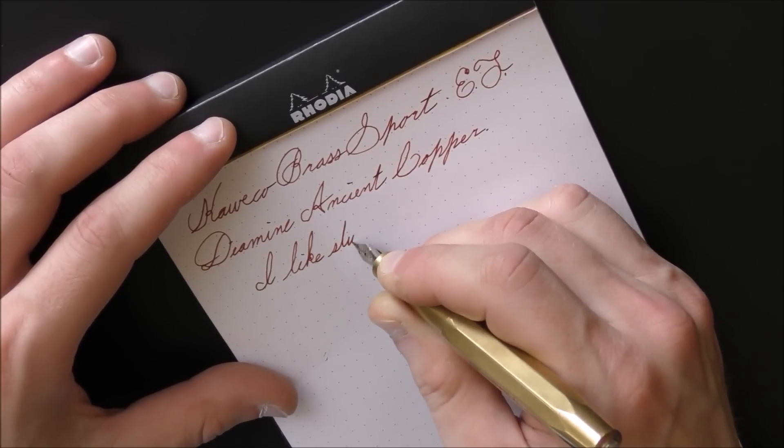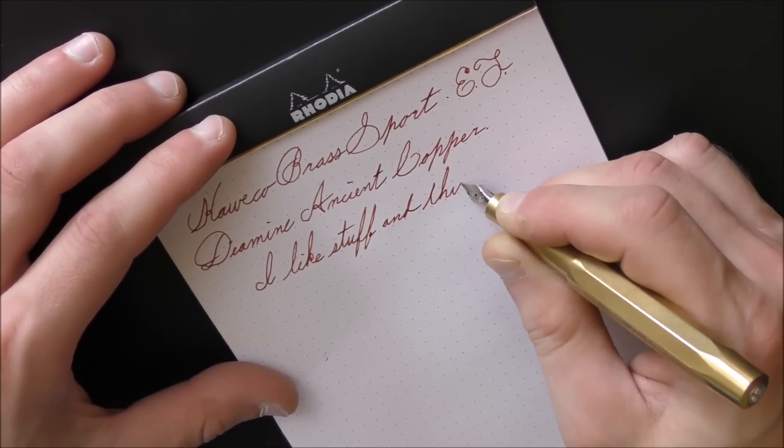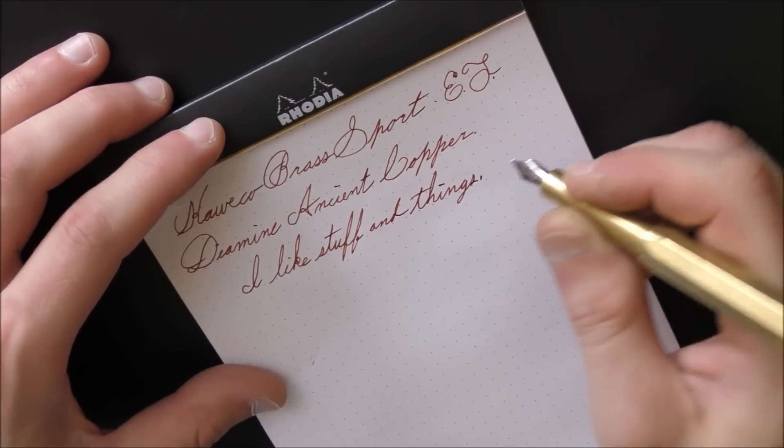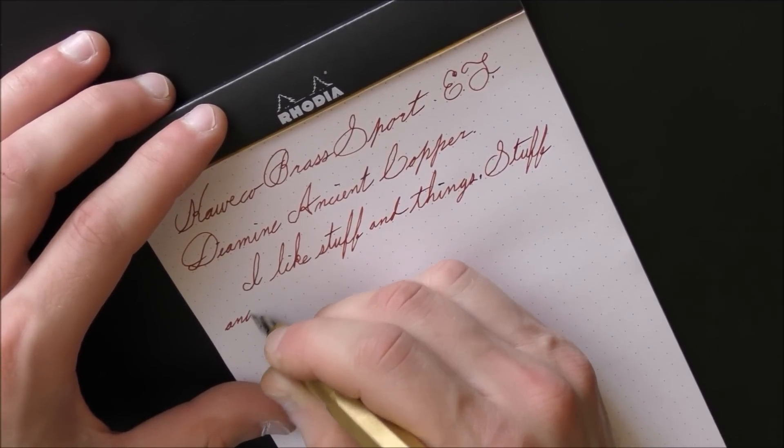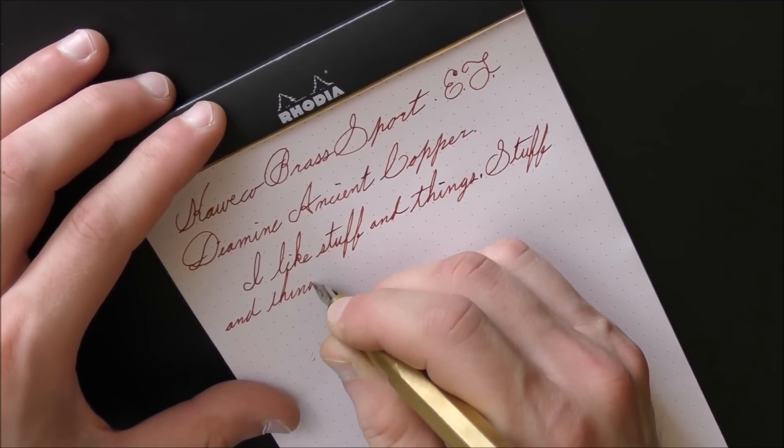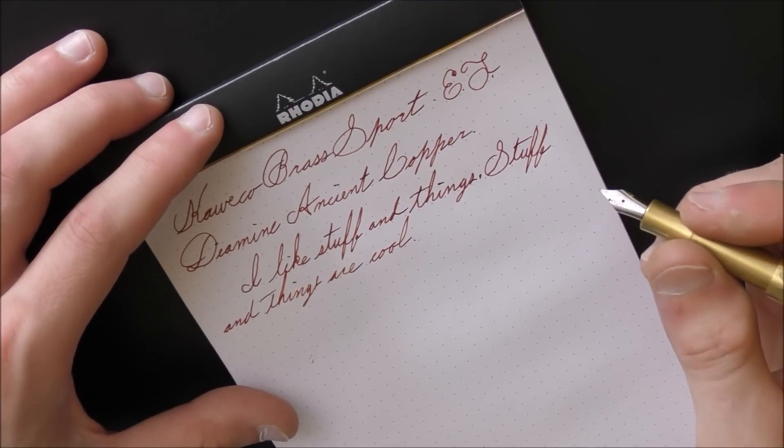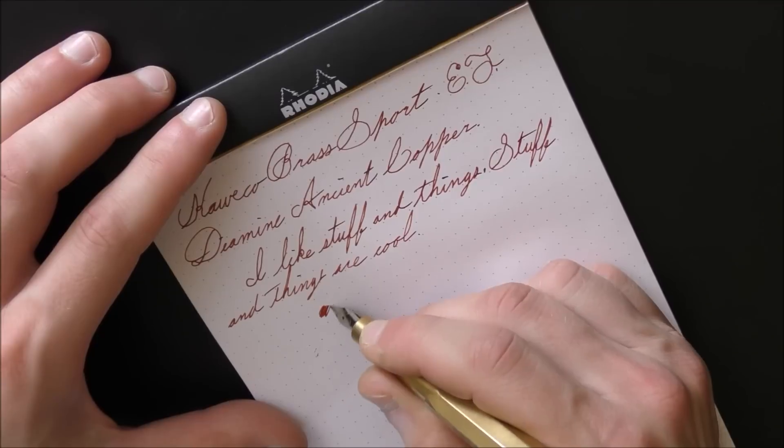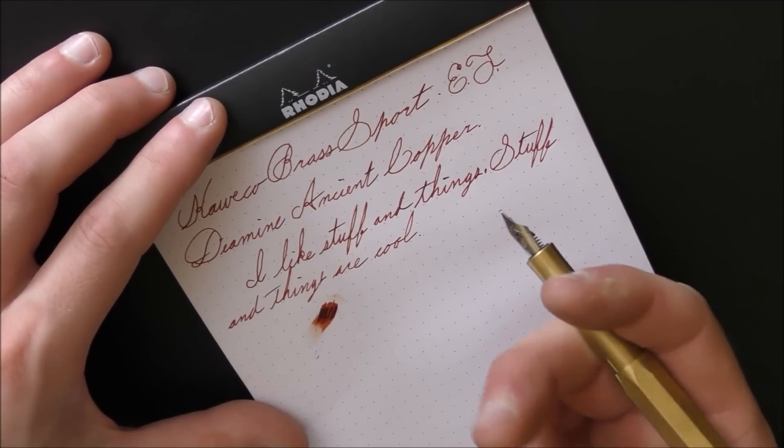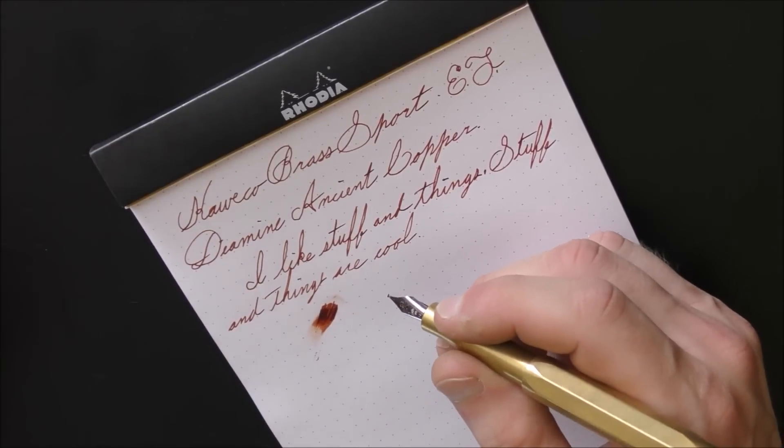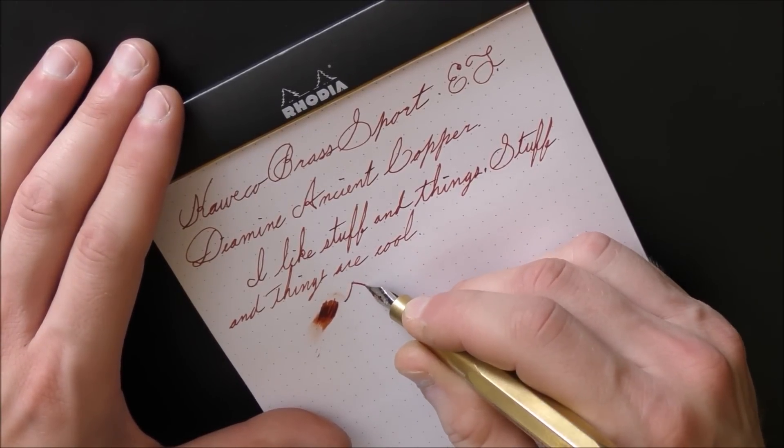I like stuff and things. Stuff and things are cool. I think we can all agree with that. Now this isn't the wettest pen in the world. In fact, I think it's a little drier than my fine nibbed Kaweco Classic Sport was, but not horrible by any means. It puts out enough ink. It keeps up anyway. And this is an extra fine, so obviously it's not going to put down as much of a thick line as would a medium, broad, whatever.